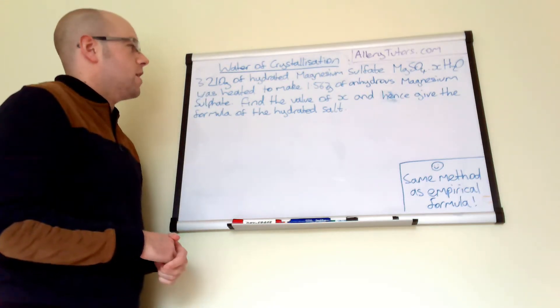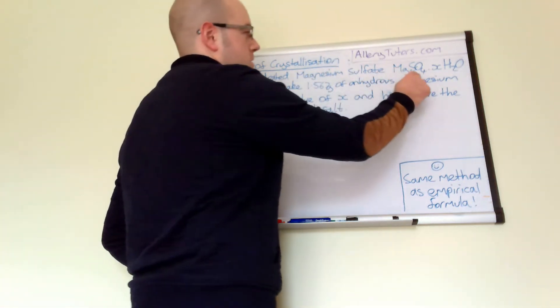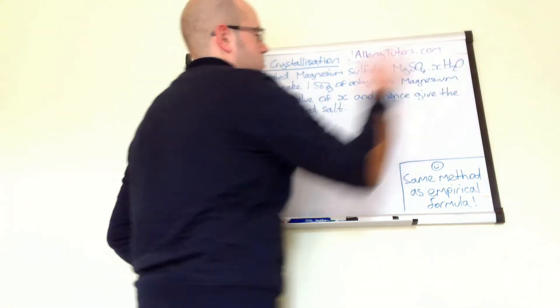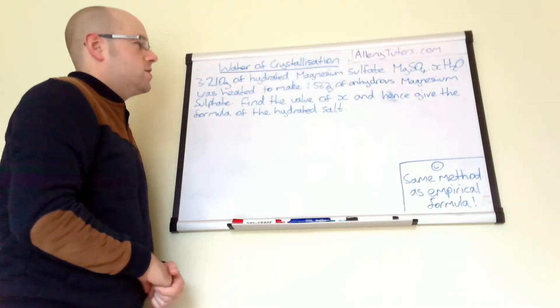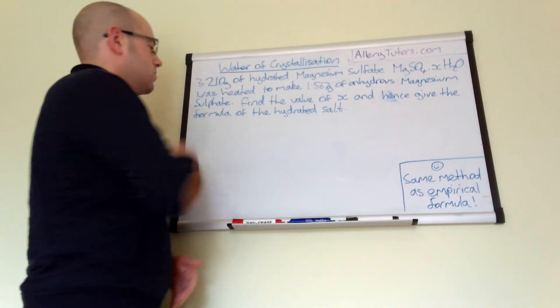3.210 grams of hydrated magnesium sulfate which is MgSO4.XH2O was heated to make 1.567 grams of anhydrous magnesium sulfate.